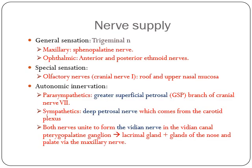Nerve supply: general sensation comes from the trigeminal nerve — via the maxillary division through the sphenopalatine nerve, and the ophthalmic division through the anterior and posterior ethmoidal nerves. Special sensation goes through the olfactory nerve, which is the first cranial nerve, supplying the roof and upper nasal mucosa.